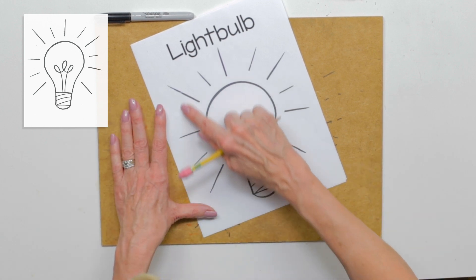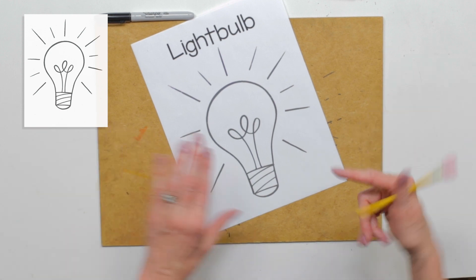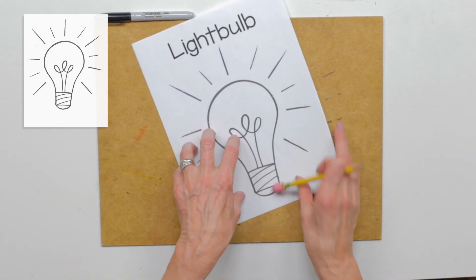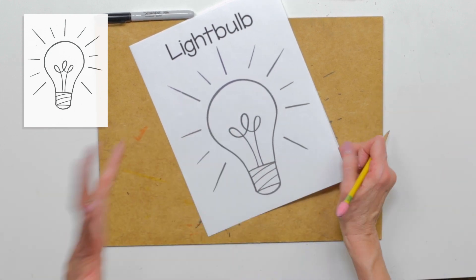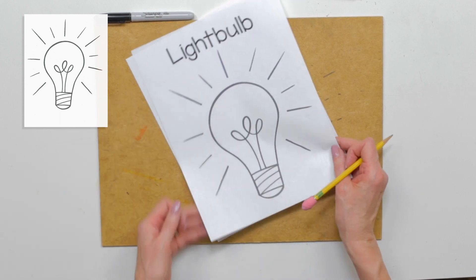Notice around it all the marks that indicate brightness. This is a great thing to draw when you want to say 'I have an idea' - you draw a lightbulb like the light went on.